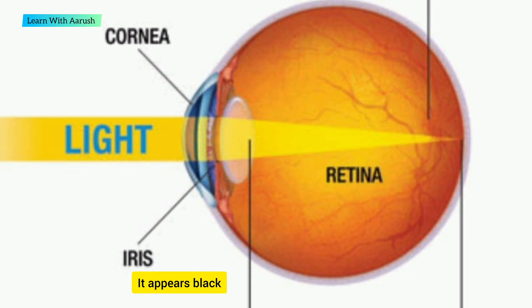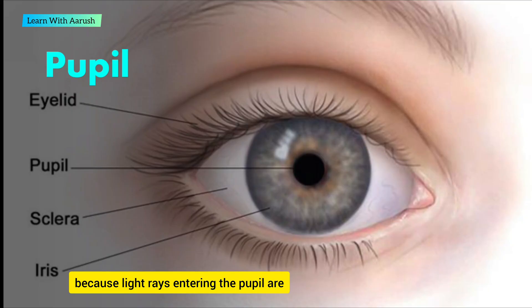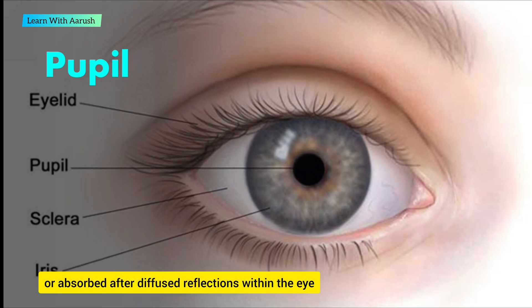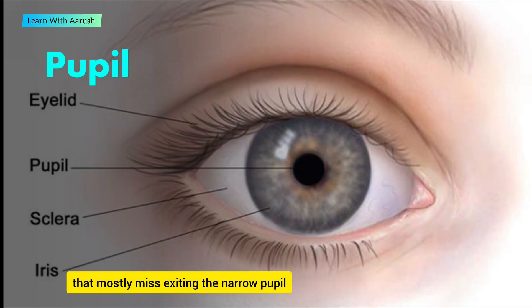It appears black because light rays entering the pupil are either absorbed by the tissue inside the eye directly, or absorbed after diffused reflections within the eye that mostly miss exiting the narrow pupil.